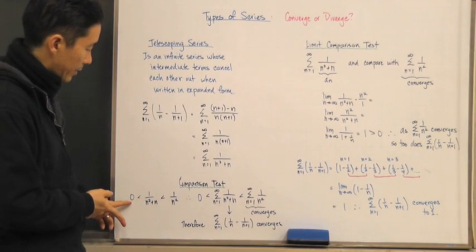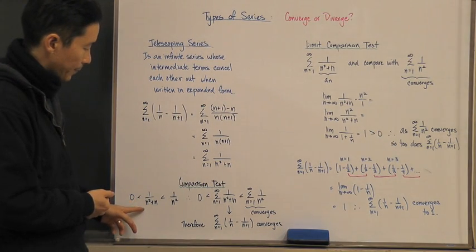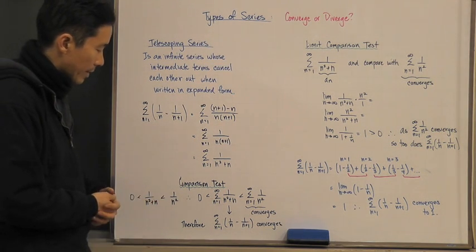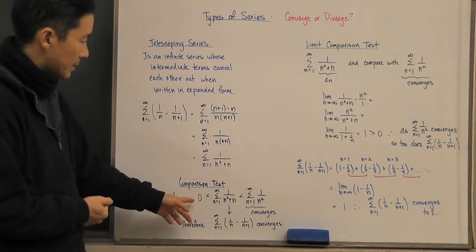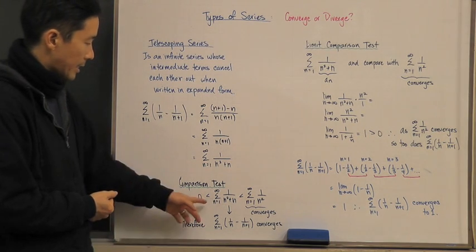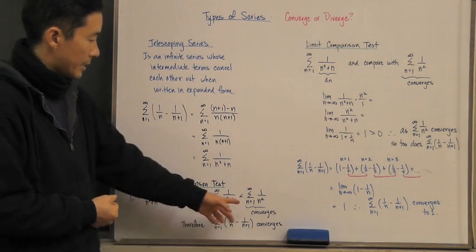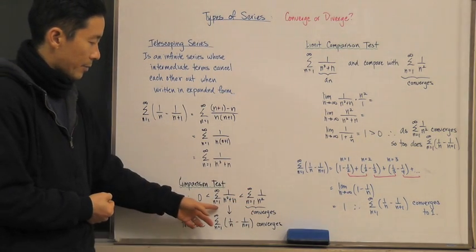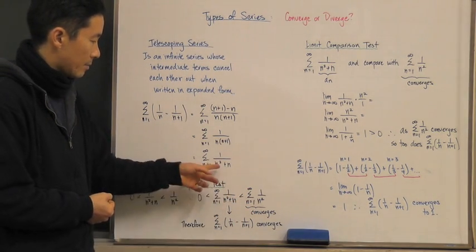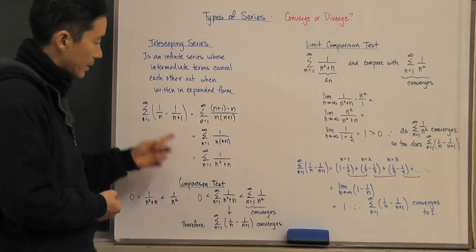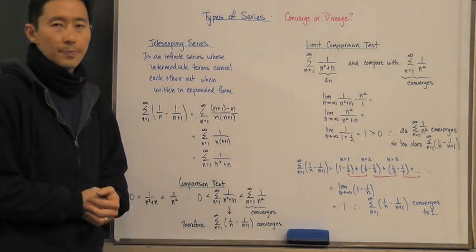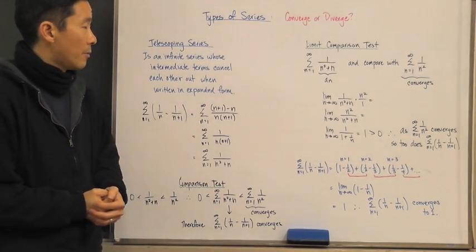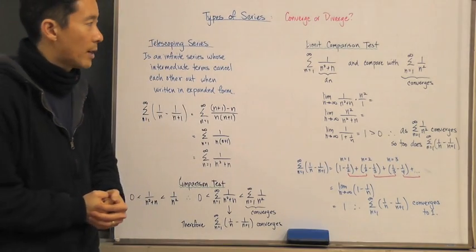We know that this is going to be greater than zero and also less than one over n squared. So if we take the infinite series of one over n squared, we know it converges, and therefore our simplified series one over n squared plus n also converges. We can use the comparison test, or even the limit comparison test, to determine this.